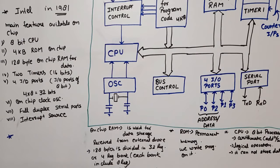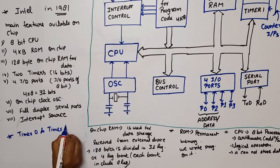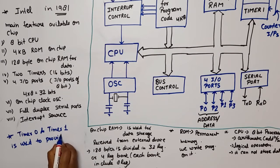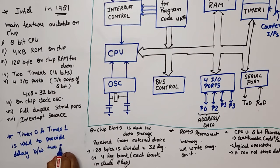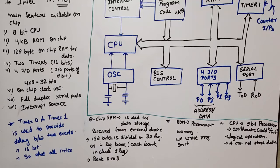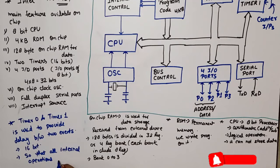Timer 0 and Timer 1 are used to provide delay between two events. They can also be used as counters — they are 16-bit counters. The timers provide delay so that all internal operations can be synchronized.